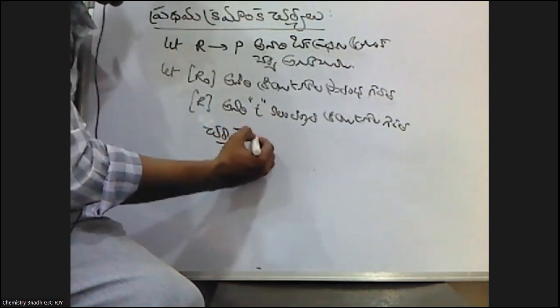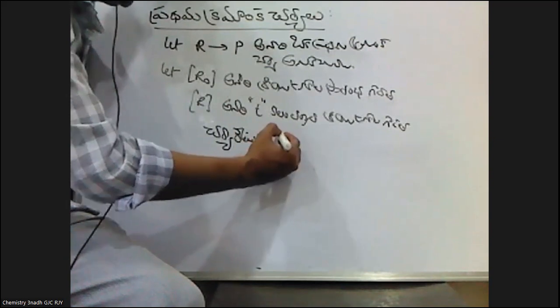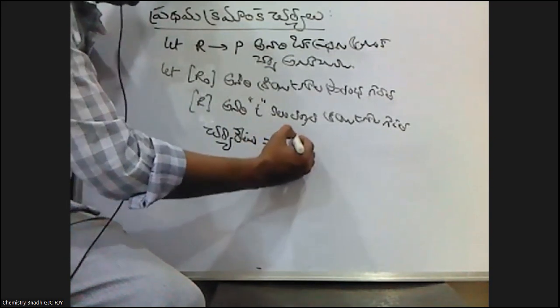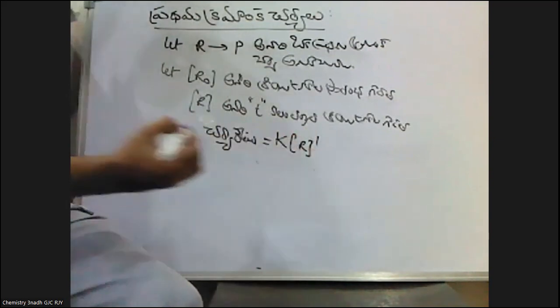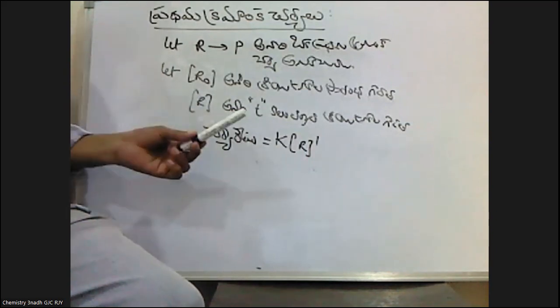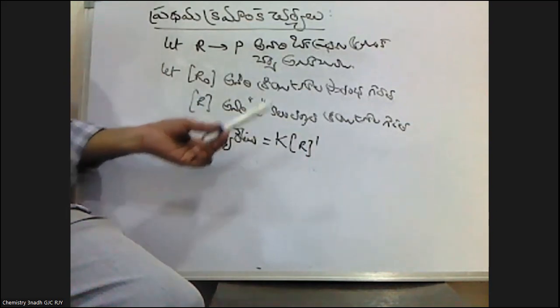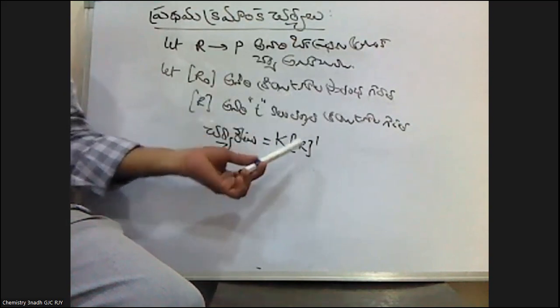The rate is equal to K into R. So when we think of the rate of K into R, the time is equal to K into R.